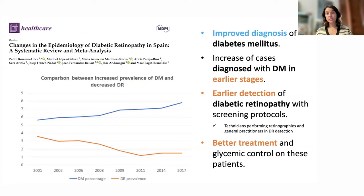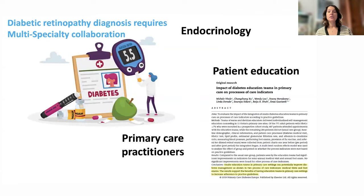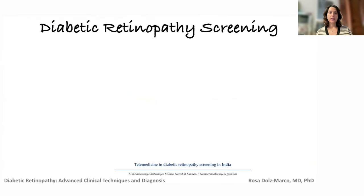We also have better treatments for systemic and glycemic control. My key point is that without good multi-specialty collaboration, we cannot diagnose diabetes early. We need endocrinology and primary care working together with us. We also need to focus on patient education so patients understand the importance of early diagnosis.